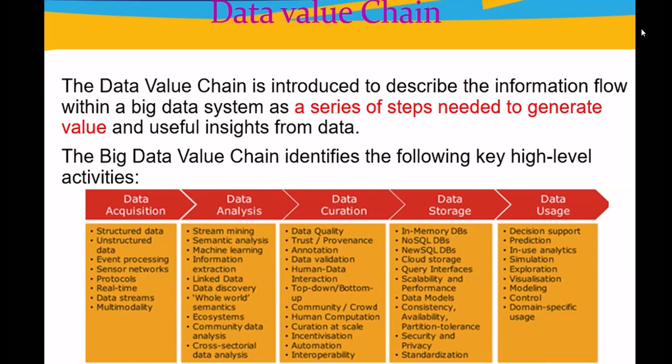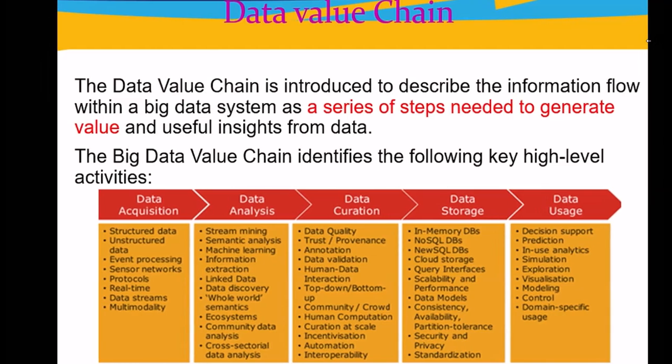The third step is data curation. It is the active management of data over its life cycle to ensure it meets the necessary data quality requirements for specific usage. Data curation processes can be categorized into different activities such as content creation, selection, and classification.